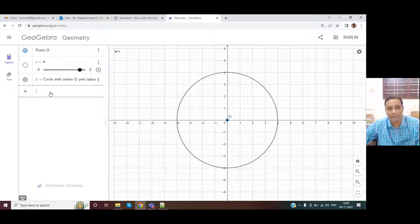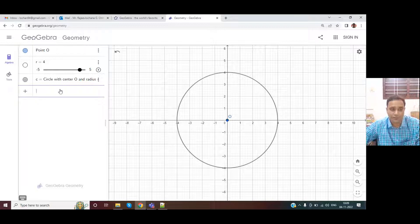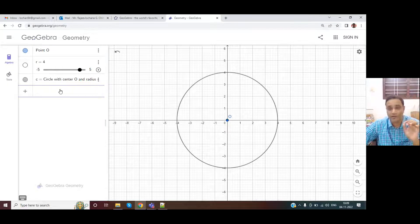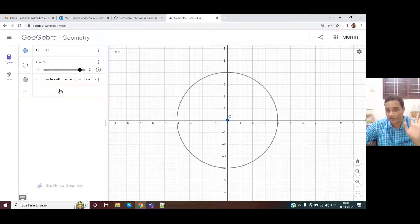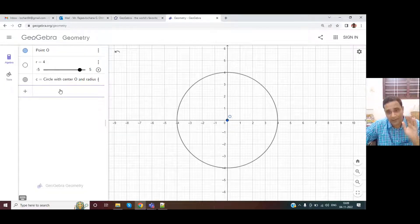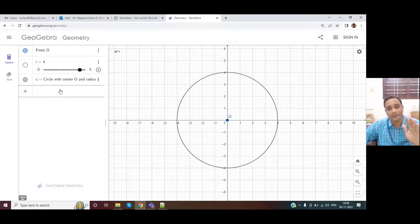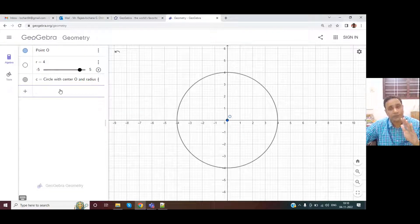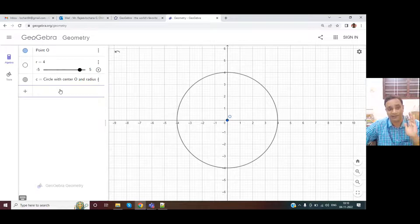Now, if we want a point on the circle, there is a parametric representation of a point on a circle. X coordinate is R cos theta, Y coordinate is R sine theta, where theta is the angle. The point P makes with respect to the positive X axis.